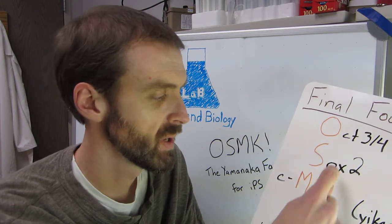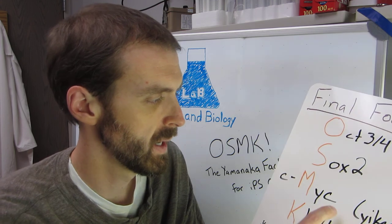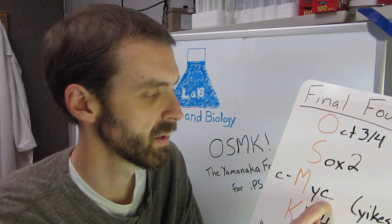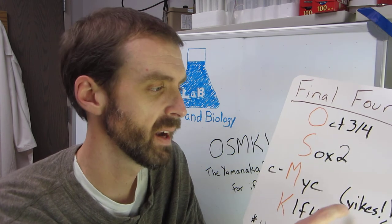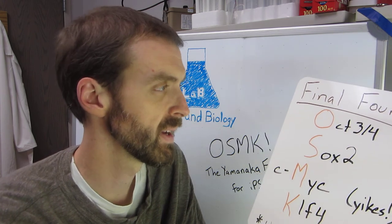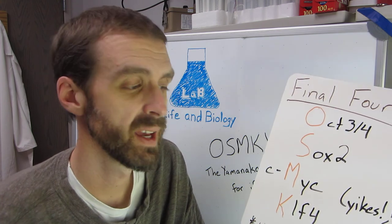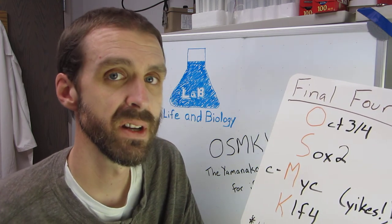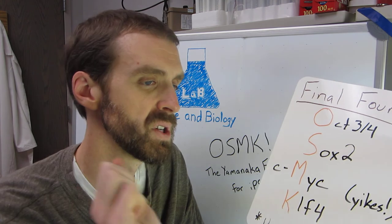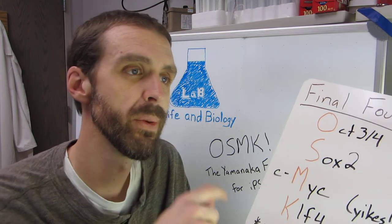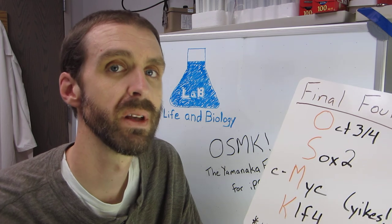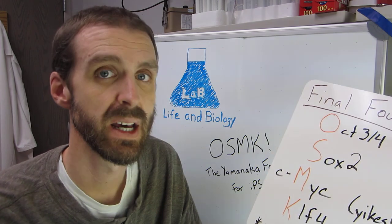These are four different transcription factors. And one of these, in particular, CMYK, is an oncogene. So overexpressing that caused some concerns. That's why I have yikes there. But these are the four genes that they came out with. So you could take a differentiated skin cell, throw these four genes into that cell, and the cell would de-differentiate back all the way to having pluripotency, the ability to turn into any type of cell.